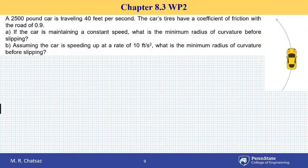The diagram shows the top view of a car, a 2,500 pound car that is traveling with a constant speed of 40 feet per second on a curved road. If the tires have a coefficient of friction of 0.9, the friction coefficient between the tires and the road is given as 0.9, what is the minimum radius of curvature before it starts slipping?